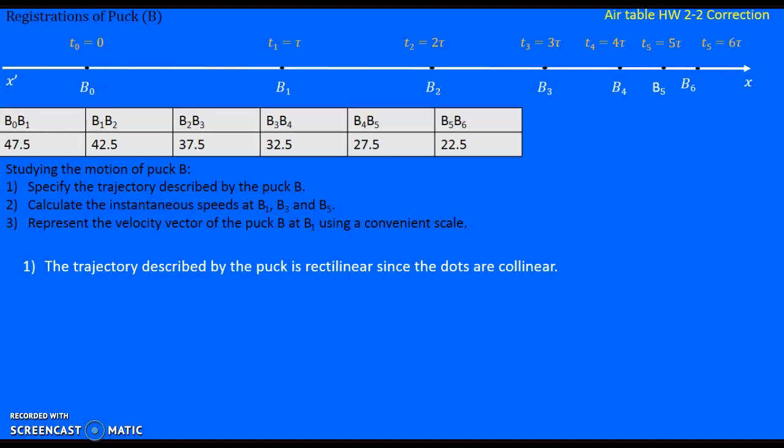The trajectory described by the puck is rectilinear since the dots are collinear. Calculate the instantaneous speeds at B1, B3, and B5.